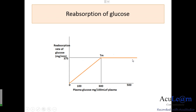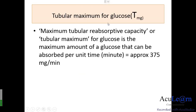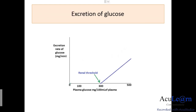The transport maximum refers to the plasma concentration at which the carriers are fully saturated. This tubular maximum for glucose represents the maximum tubular reabsorptive capacity — the maximum amount of glucose that can be absorbed per unit time. It is approximately 375 milligrams per minute.